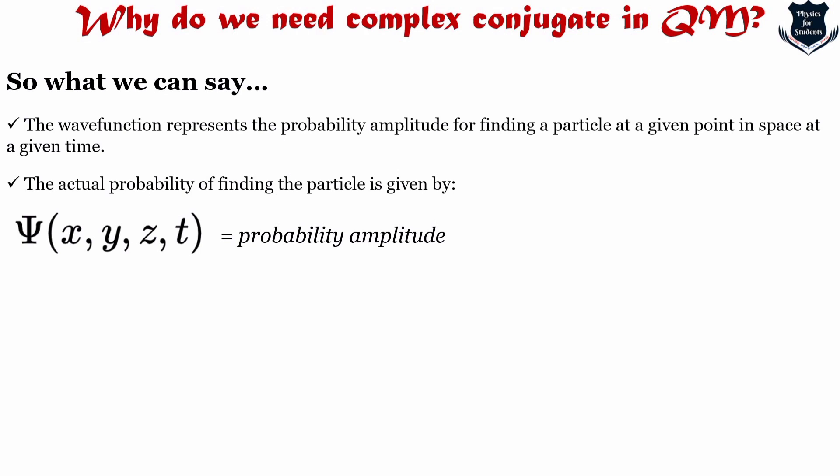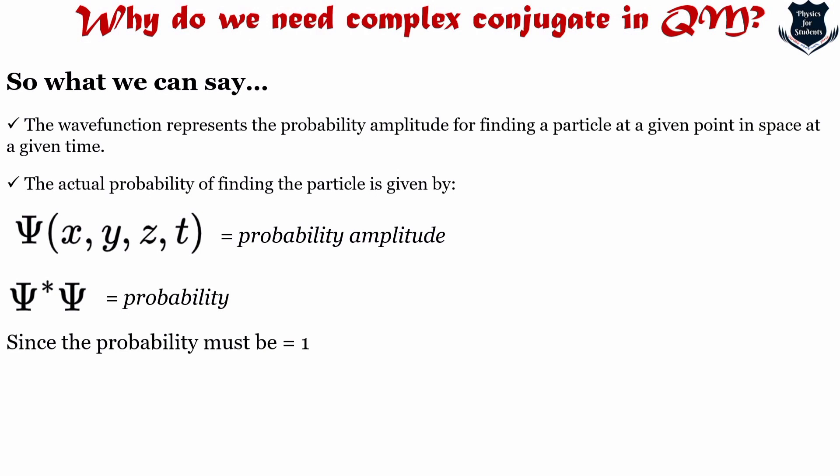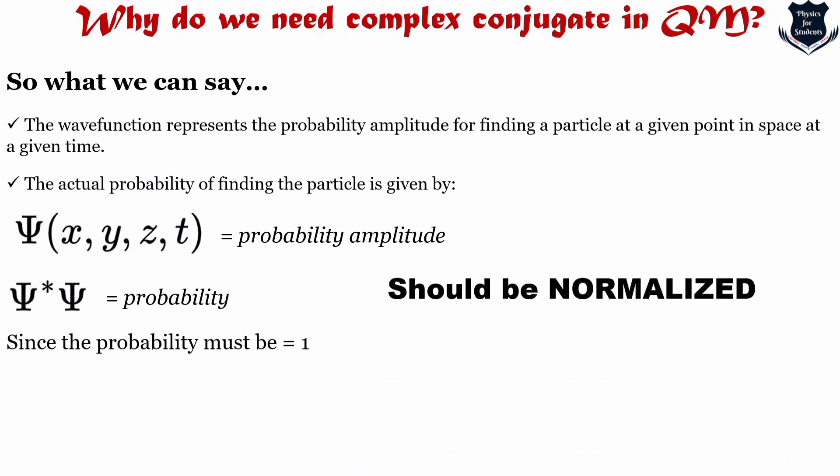When a real positive definite quantity is needed from a complex function, the complex conjugate is used. The product of a complex number and its complex conjugate is analogous to squaring a real function. This is used in the rationalization of complex numbers. The probability amplitude squared should be normalized — that is, the integral over all space should equal 1 — and to normalize we use integration to get this value of 1, using the complex conjugate to turn the probability amplitude into a real probability.